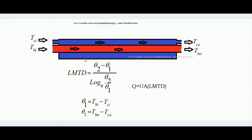Suppose this is a parallel flow heat exchanger — it is a double pipe heat exchanger. Hot fluid enters through the central pipe and cold fluid enters and flows through the outer peripheral pipe. Hot fluid enters with temperature T_HI and exits with T_HO; cold fluid enters with T_CI and exits with T_CO. LMTD equals theta-2 minus theta-1 divided by ln(theta-2 / theta-1).